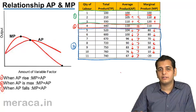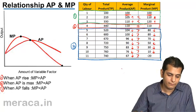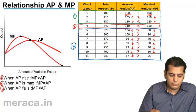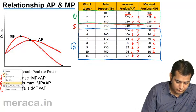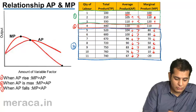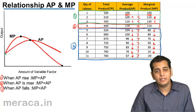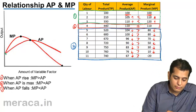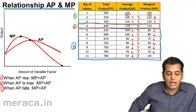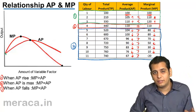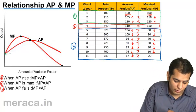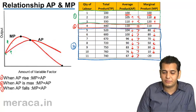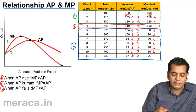This can also be explained with the help of a graph. Now, here we have a graph, which shows two curves. Both start up from the same point. AP and MP both start up from the same point. But what happens is, MP rises higher than AP. The important thing to note here is, both are rising. Both MP and AP are rising. The only difference is, MP rises higher than AP.